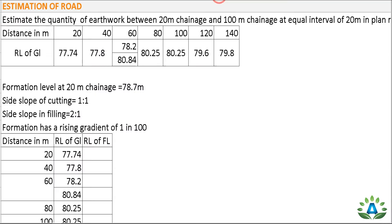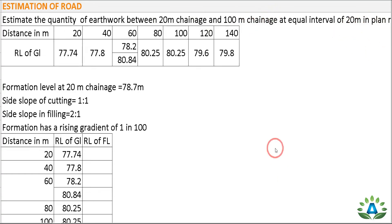Namaste and welcome to my channel. Today we are going to do the estimation of road. Last time we completed the estimation of road by mid-sectional method, and today again we are going to do estimation of road by mid-sectional method. The question is: estimate the quantity of earthwork between the 20-meter chainage and 100-meter chainage at equal intervals of 20 meters in a plain road.